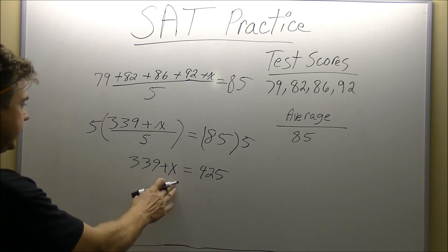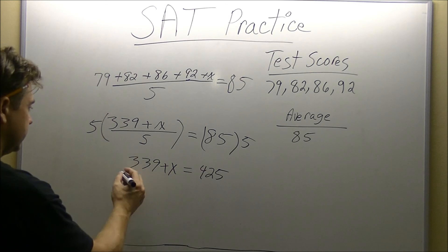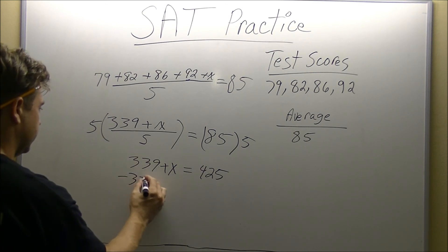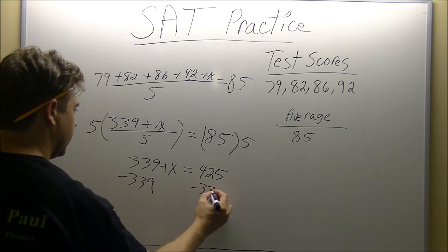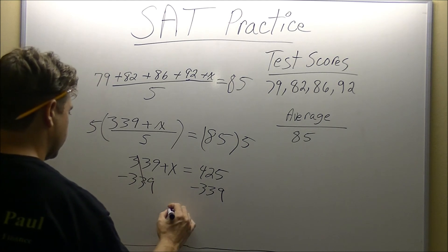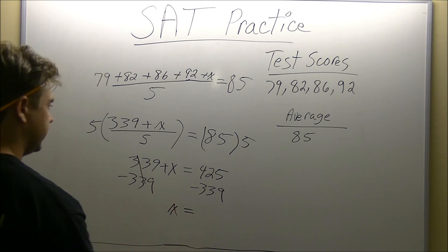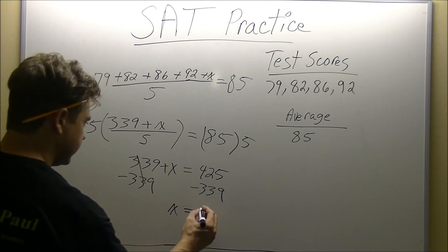Our next step is, we're still trying to get X by itself. We have 339 tied to X by addition, so we're going to subtract. Whatever we do to the right, we're going to do to the left. That goes to zero. Drop our X. And 425 minus 339 is going to give us an 86.